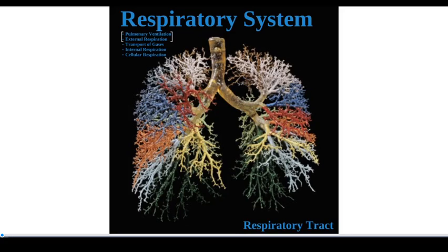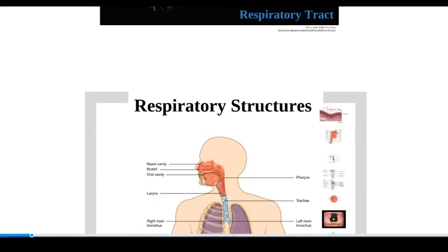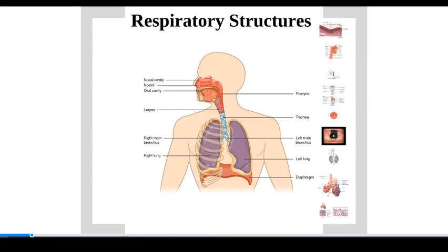In this section of the respiratory system chapter, we're going to consider the structures of the respiratory tract. Remember the brackets around ventilation and external respiration in the list of respiratory functions — those are the ones that take place in these structures. The book presents the structures in terms of the conductive zone and the respiratory zone. I want to concentrate on conduction — the moving of air in and out of the lungs — and I'll include the structure of the respiratory zone at the end.